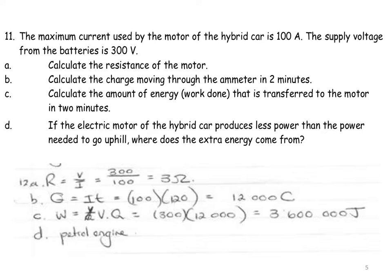Calculate the charge moving through the ammeter in two minutes. Charge is equal to current times time. Two minutes converts into 120 seconds. You've got a current strength, so you are able to work out 12,000 coulombs. Calculate the amount of work done or energy transferred in two minutes. So work done is V times Q. I've got 300 volts. I've got a charge. It's also VIT. It's exactly the same information when you land up with 3,600,000 joules.